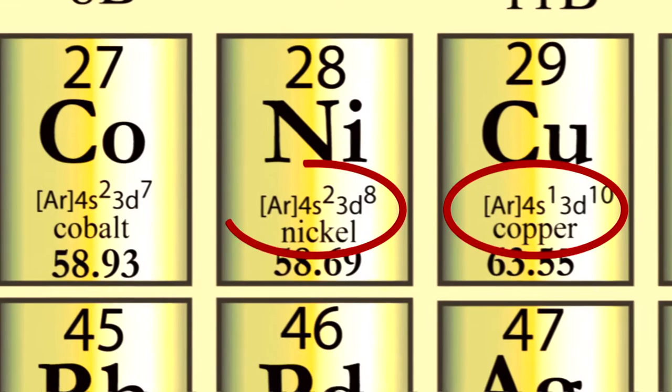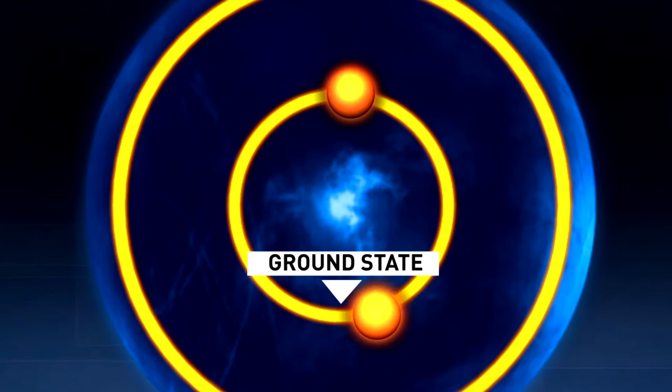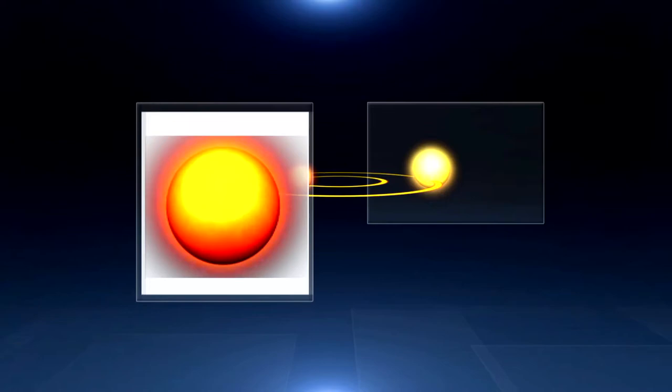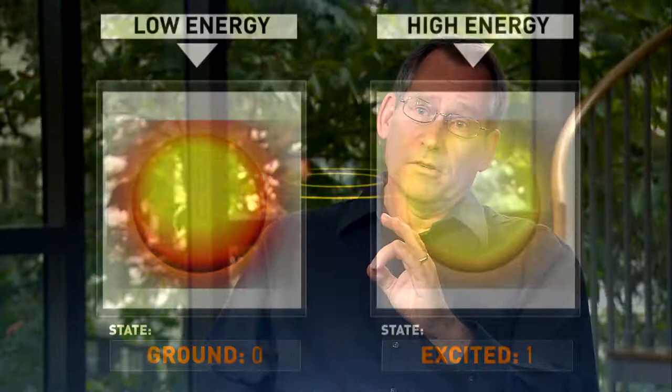By manipulating the state of an atom's electrons, scientists can make them represent either the zero or one bit. And we could store a bit like we do in digital computers today by preparing each atom in either its ground state or an excited state.